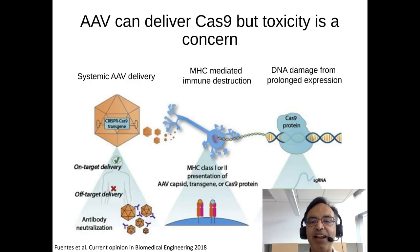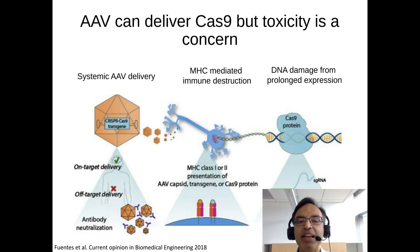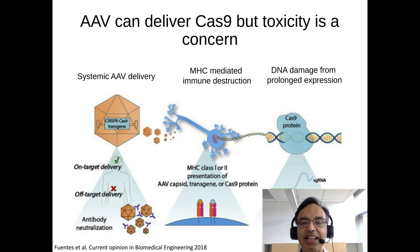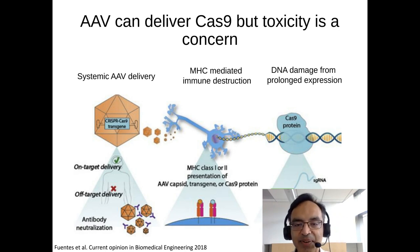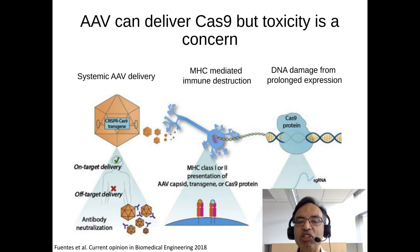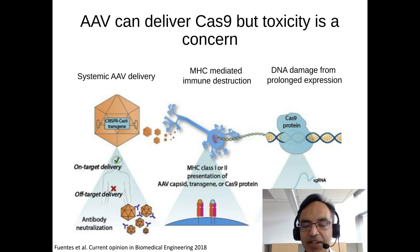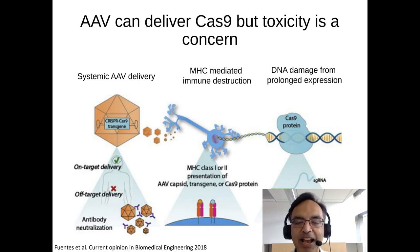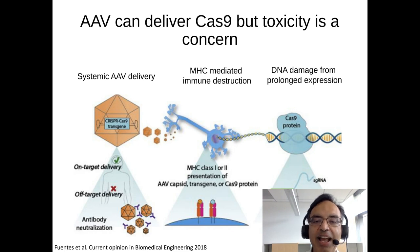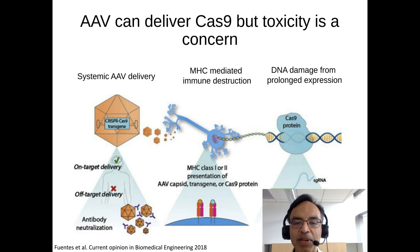Viral-based methods for delivering Cas9 are by far the most efficient ways of transducing Cas9 into cells and in vivo. Of the viral-based methods, AAV is perhaps the most advanced — there's already been a human clinical trial with AAV Cas9 gene editing in the eye. However, using AAV or other viruses to deliver Cas9 can be problematic because these viruses have been designed to deliver human genes for long periods of time, whereas gene editing enzymes are invariably bacterial enzymes and will cause an immune response if expressed in people for long periods of time.